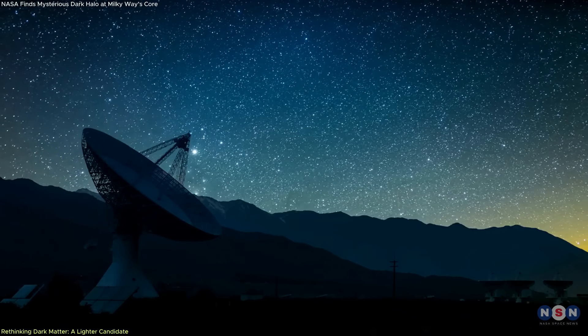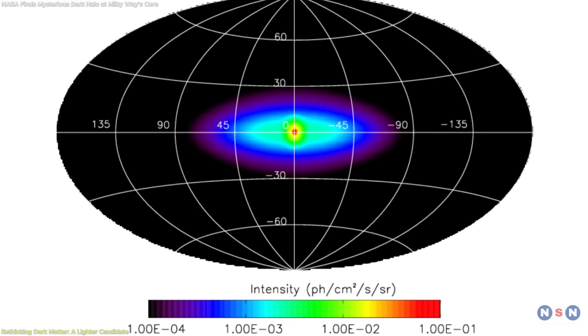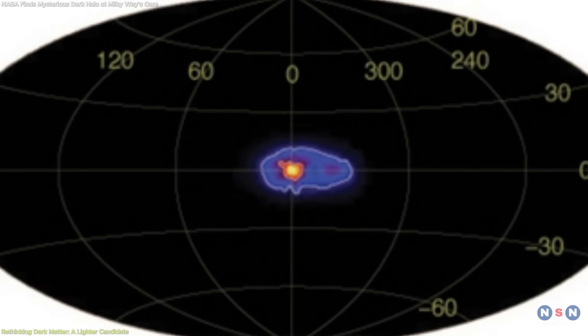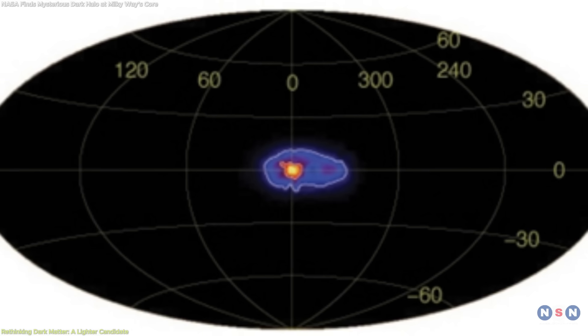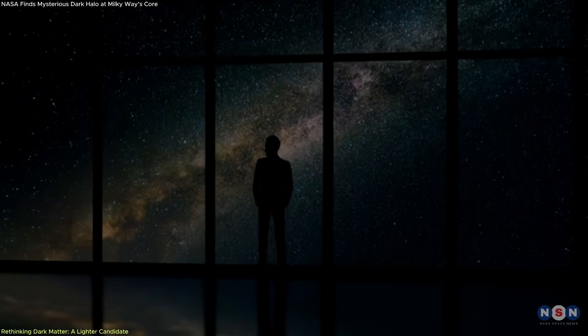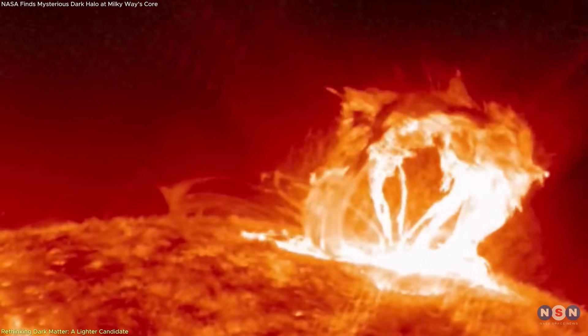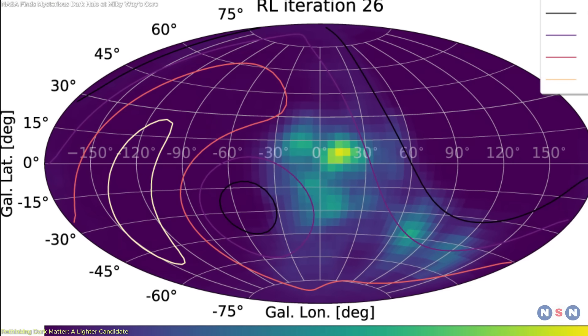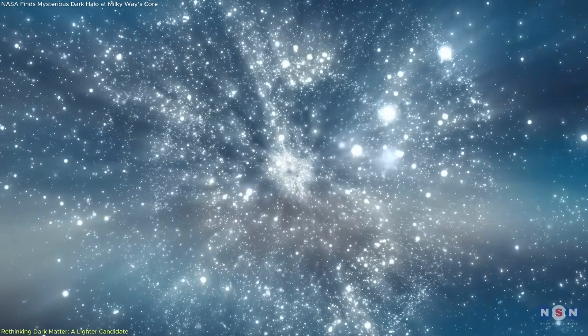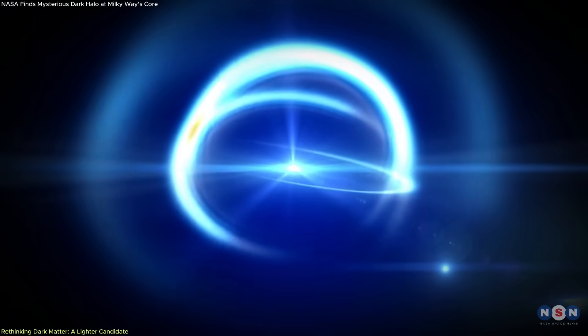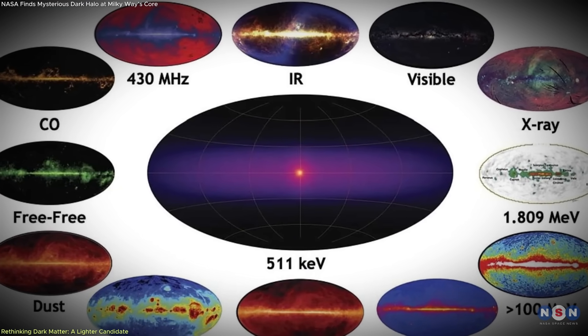Interestingly, this also connects to a long-standing mystery in X-ray astronomy, the 511 kilo-electron-volt emission line. This signal, detected in the galactic center for decades, represents the energy released when positrons annihilate with electrons. While various explanations have been proposed—pulsars, black holes, stellar flares—none have fully accounted for the quantity and distribution of the signal. But if light-dark matter annihilation is occurring in the galactic center, it could explain both the ionized hydrogen and the 511 kilo-electron-volt gamma-ray emission in a unified way.